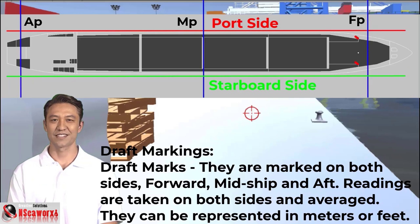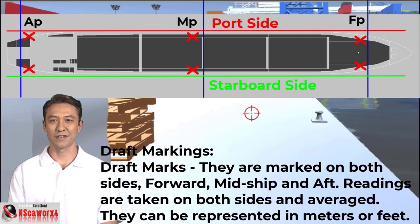Draft marks are marked on both sides — forward, midships, and aft. Readings are taken on both sides and averaged. They can be represented in meters or feet.